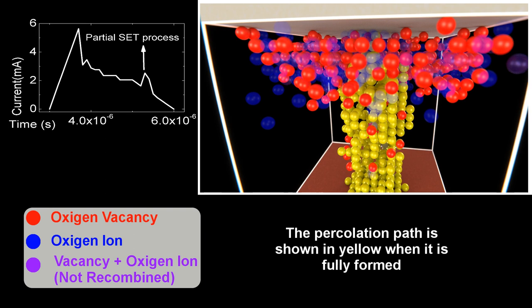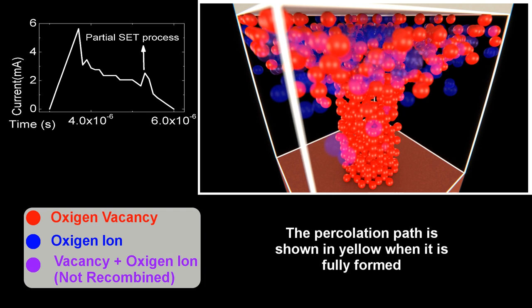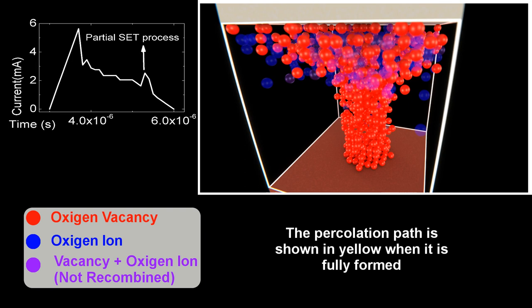A reset process is performed here, but at certain times a percolation path is formed, and for a short time a set process takes place. Later on the filament is destroyed and the reset process goes on.